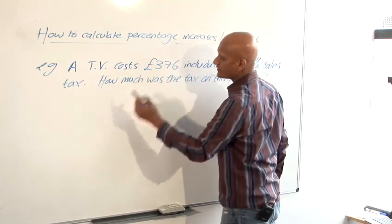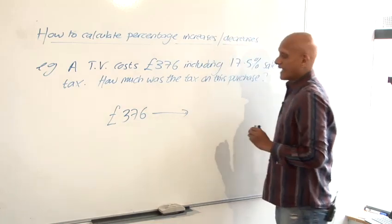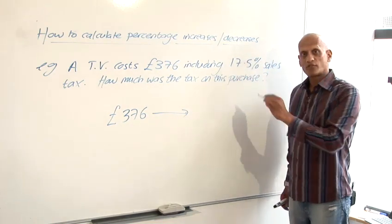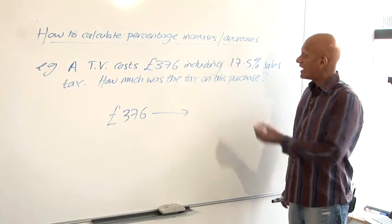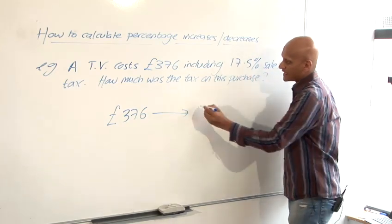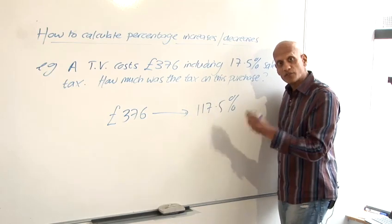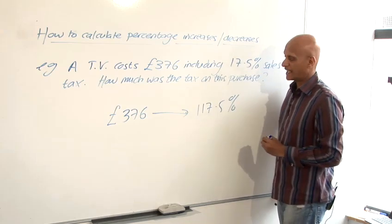The 376 pounds is not 100% because it already includes the 17.5%, remember 100% will be the original price before any tax has been added on. This includes 17.5% tax so this is 117.5%, it's the 100% original price and the 17.5% tax already included on there.